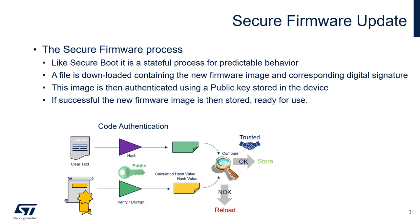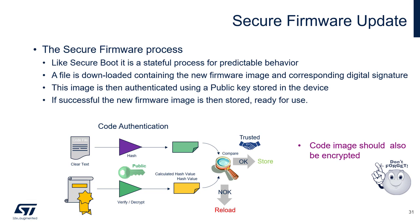The secure firmware update, like secure boot, is also a stateful process for predictable behavior. A file is downloaded containing the new firmware image and corresponding digital signature. This image is then authenticated using a public key stored in the device. If successful, the new firmware image is stored ready for use. The code image has to be digitally signed using the firmware owner's private key. The key must be kept safe — if exposed, it will allow hackers to sign their code. Code images should also be encrypted.